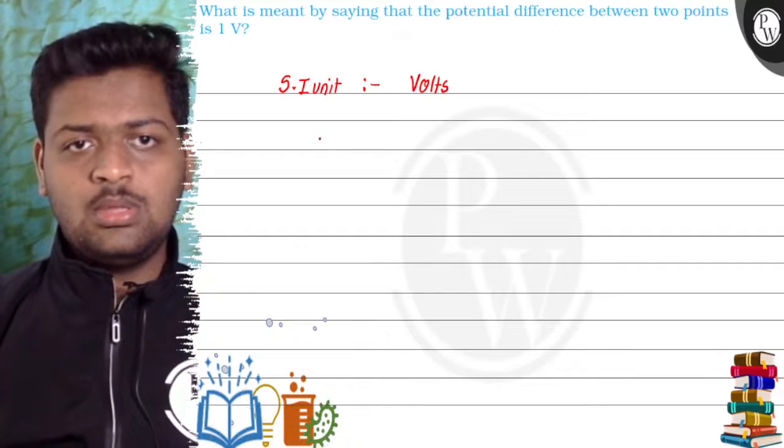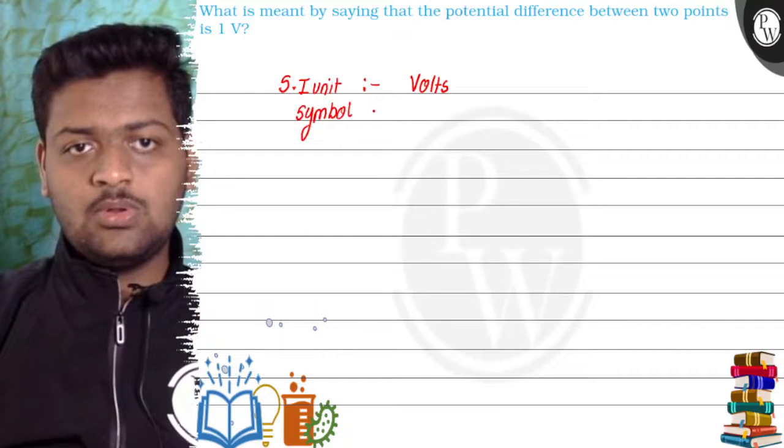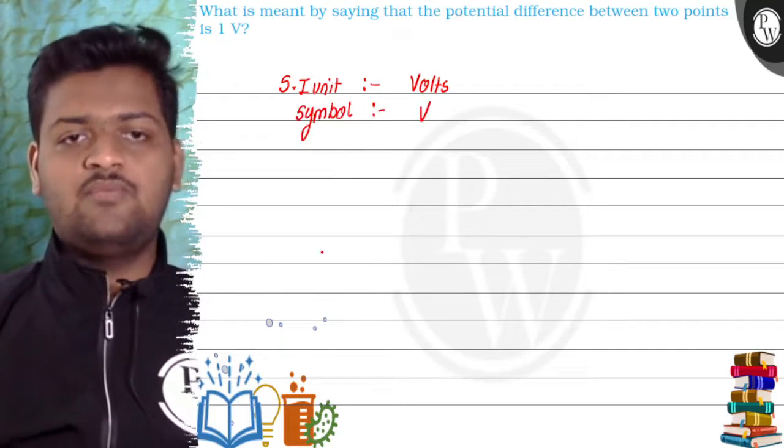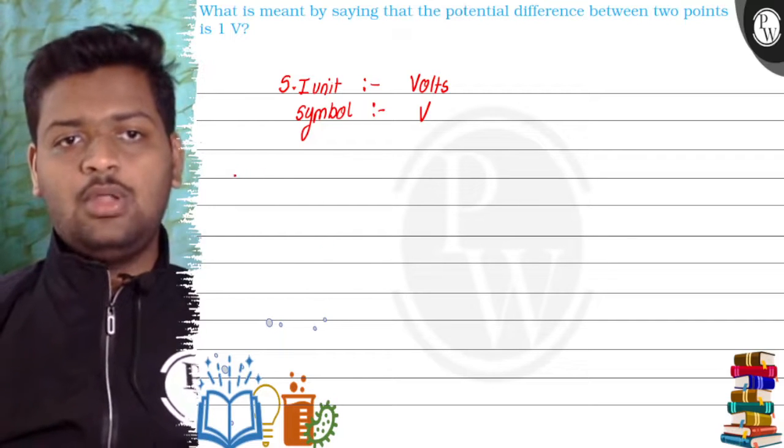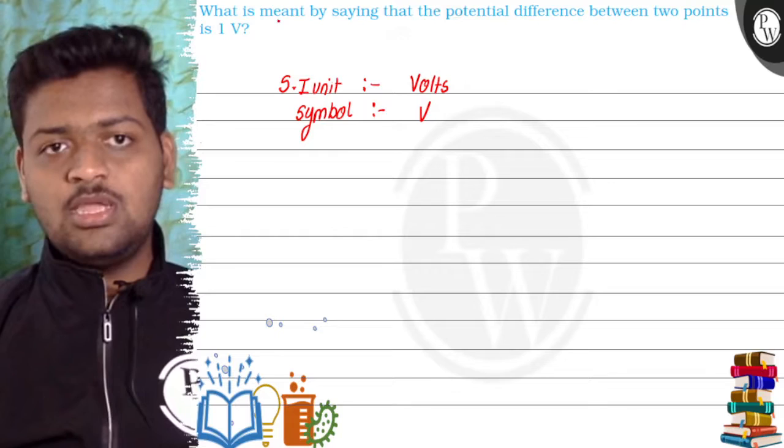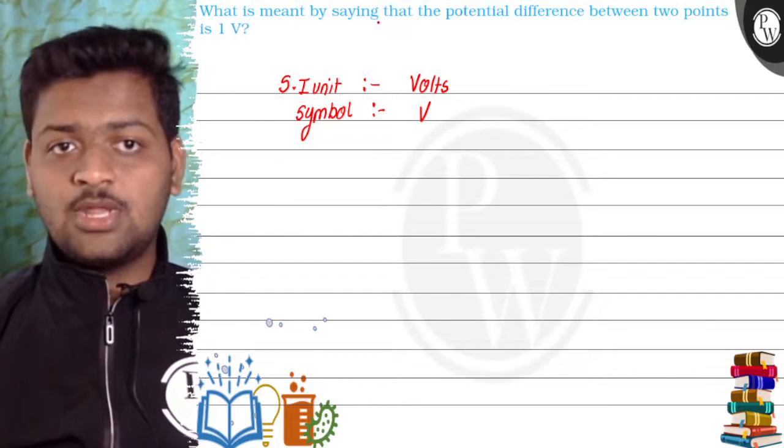The symbol with which it is represented, the SI unit or in short potential difference, is V - V for voltage. Now we will answer this particular question.